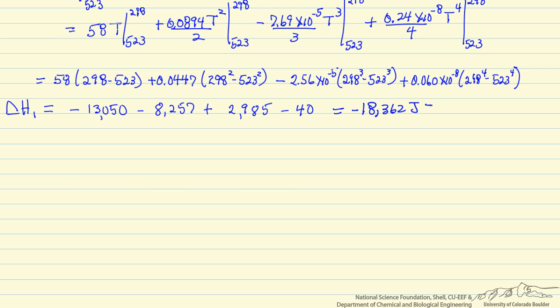So now we are going to do the same calculation for delta H3. Now we have 2 moles of HCN. And we are now heating from 298 to 523 and we only have one species, which is HCN.